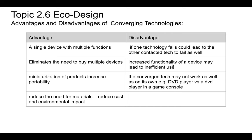Another disadvantage is that increased functionality may be inefficient — for example, DSLR cameras have video functions but don't always work well as video cameras. Sometimes combined tech doesn't work as well on its own; for instance, a DVD player can only play DVDs, but a game console can do two things — play games and play DVDs.